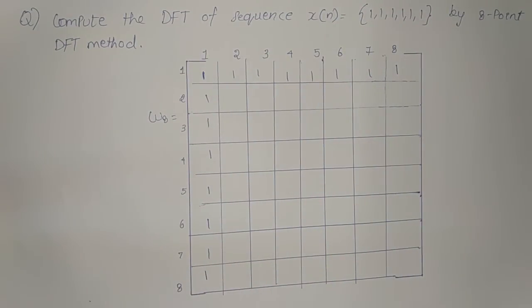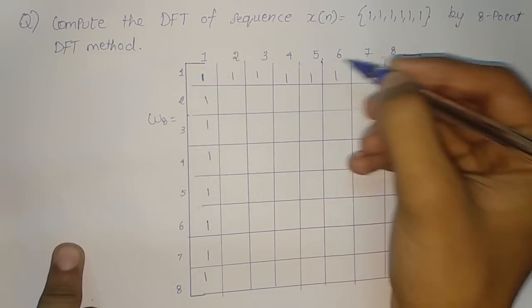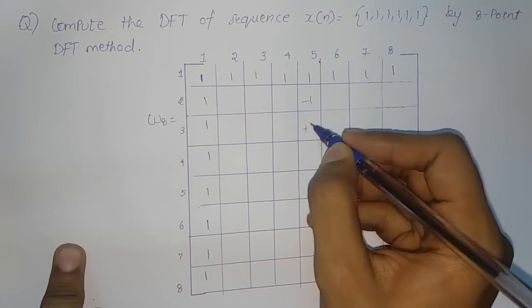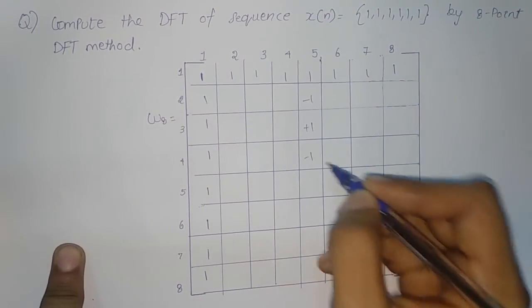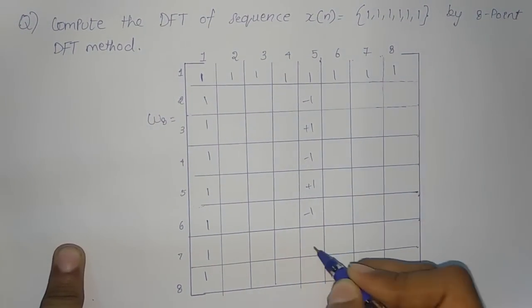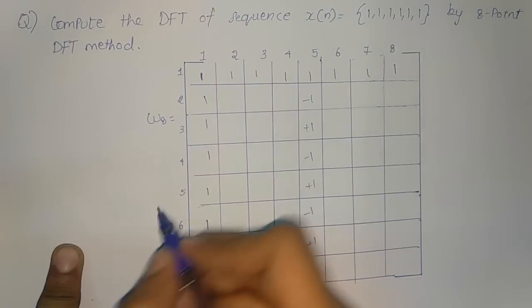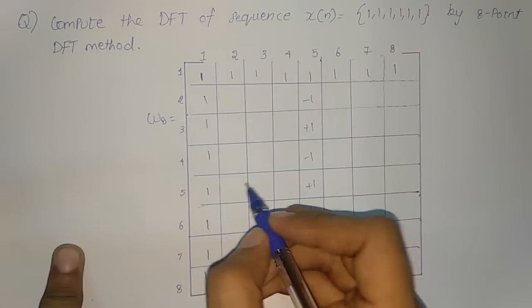The second step is that the fifth row and the fifth column of this matrix must be marked by alternating negative and positive ones. The first thing is positive in this column, so next must be negative, positive. Similarly for the fifth row as well.